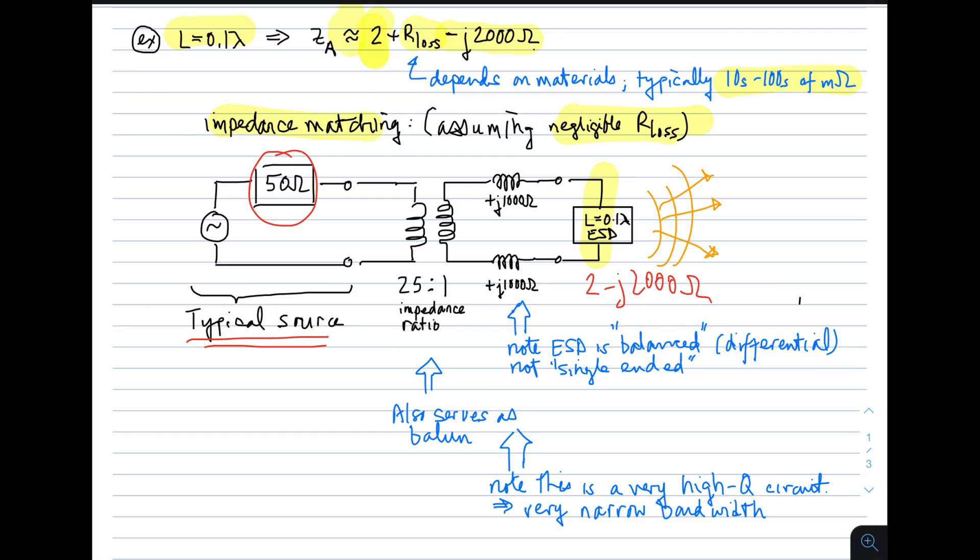So if we want to match these two things, what you see is you first have to compensate for this large negative reactance. And the way you do that is by adding large positive reactance. So those are going to be two inductors, two relatively large inductors. You might ask, why two? Why not just put in one plus J two thousand ohm reactance?